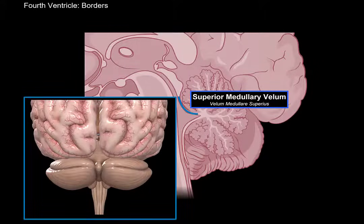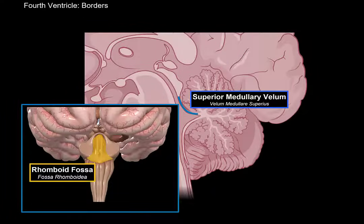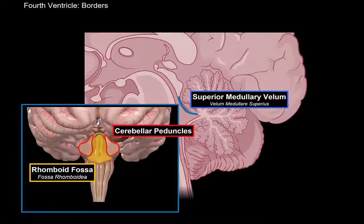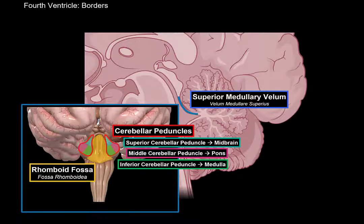Here is the posterior view of the brain. When we remove the cerebellum, you can see the base of the fourth ventricle, which is the rhomboid fossa. On either side of the rhomboid fossa, you'll see the cerebellar peduncles, which contain fibers running between the cerebellum and all three parts of the brainstem. The inferior cerebellar peduncles contain fibers to the medulla, the middle ones to the pons, and the superior ones to the midbrain.